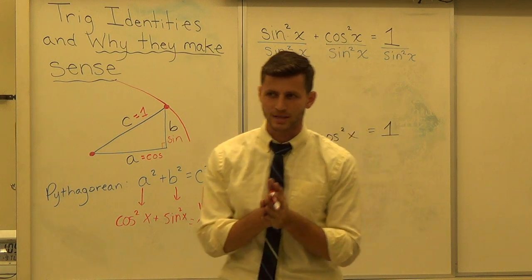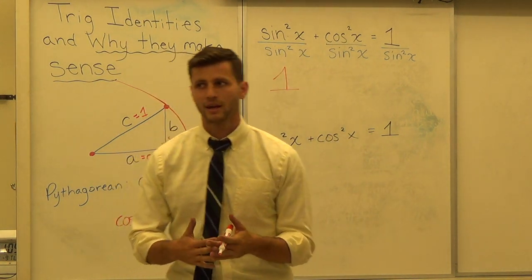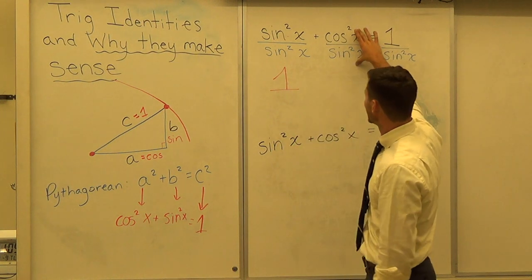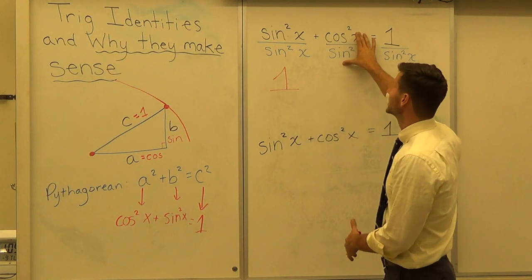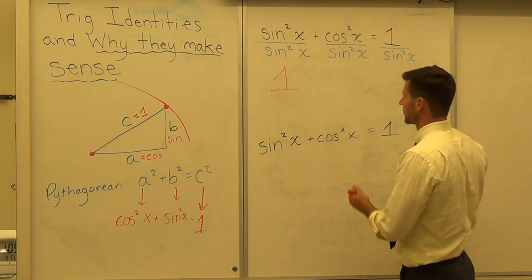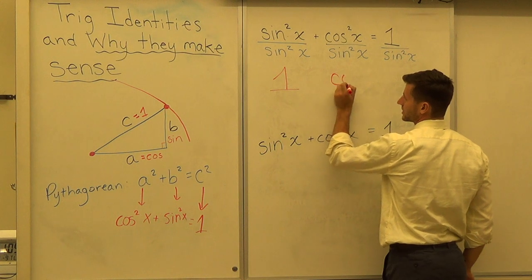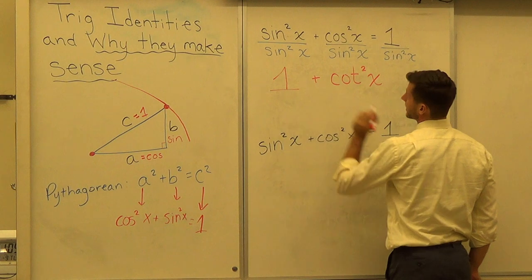Cosine squared X divided by sine squared X. How would we write that? Well, if you're a little shaky on trig, you might not remember. But actually, sine over cosine is another way of writing tangent. Cosine over sine is another way of writing the cotangent. So we can write this as the cotangent squared of X.